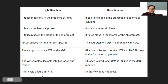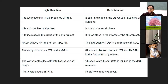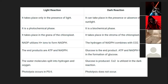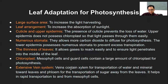Water is split into hydrogen and oxygen in the light reaction; glucose is produced and carbon dioxide is utilized in the dark reaction. Photolysis occurs in photosystem 2 — photolysis refers to the process of breakdown of water using light energy. 'Lysis' means breakdown, so photolysis is the breakdown of water in the presence of light energy.